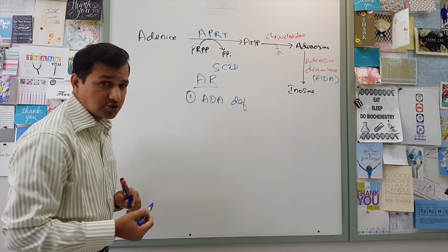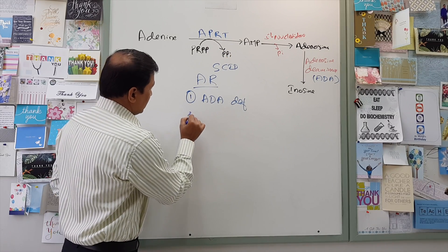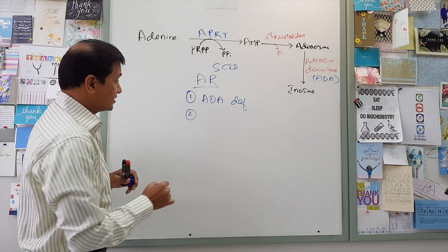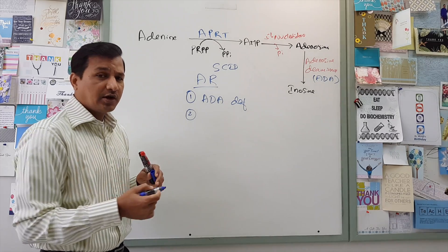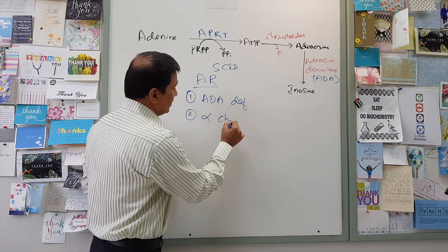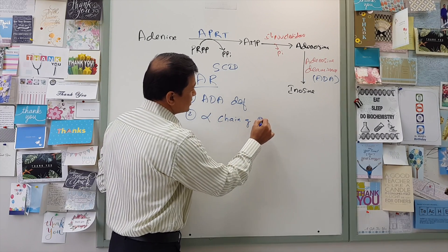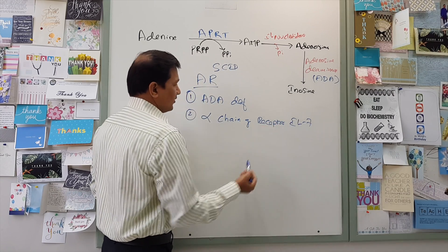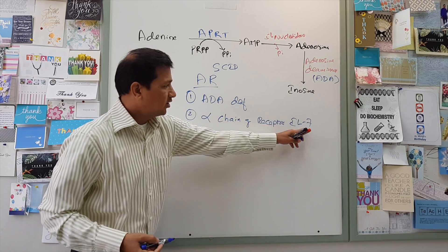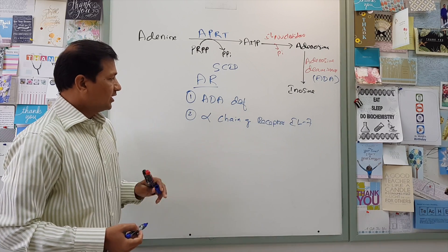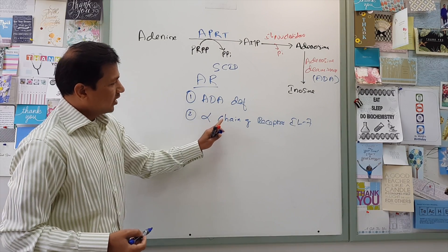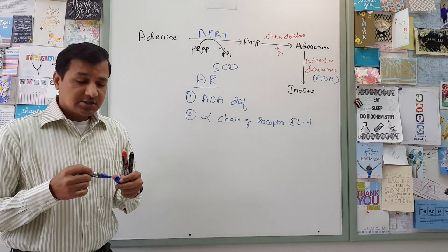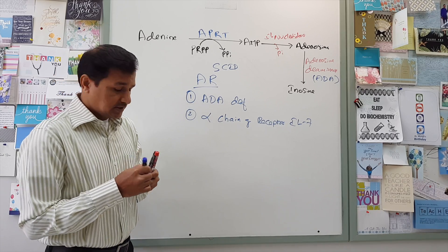The second cause for autosomal recessive SCID is a mutation in the gene coding for the alpha chain of the receptor for interleukin-7. If there is a mutation in the gene coding for the alpha chain of the IL-7 receptor, that will also give rise to autosomal recessive severe combined immunodeficiency disorder.